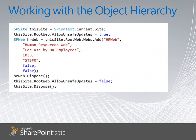This other snippet of code shows you how to create a new web. The critical thing is we navigate to it first so we can specify where the web gets created. We get a reference to SPContext.current.site, and then we can add a web to its root web.